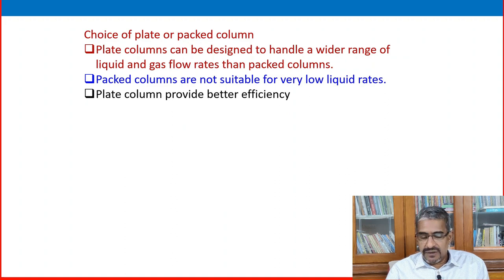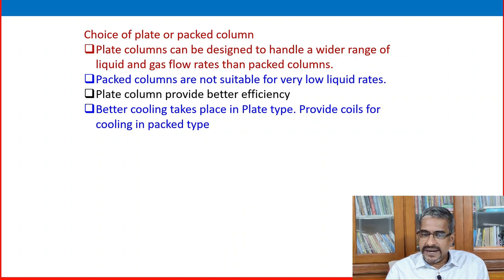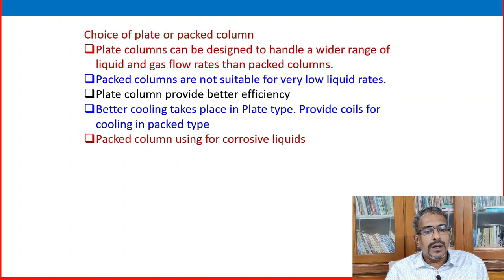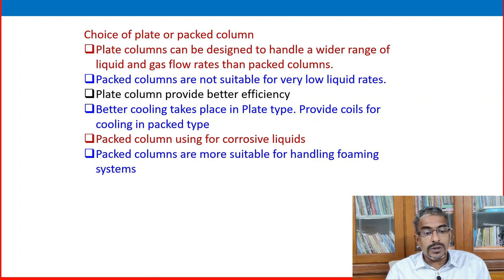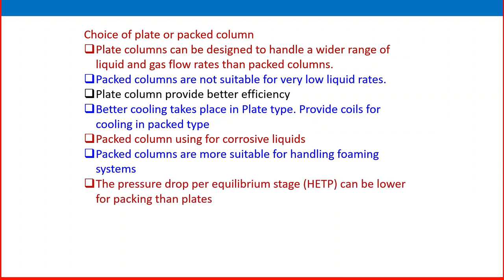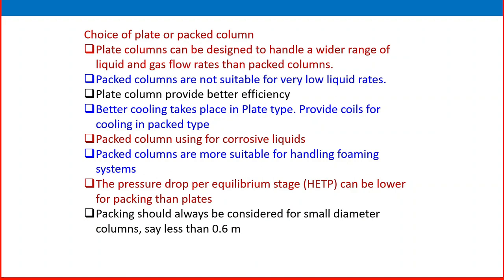Plate columns provide better efficiency and better cooling, with coils available for cooling. Packed columns are used for corrosive liquids and are more suitable for handling foaming systems. The pressure drop per equilibrium stage can be lower in packed columns than plate columns. For smaller diameter columns — less than 0.6 meters — packed type is preferred because plate internals are difficult to install and access for maintenance or plate replacement.